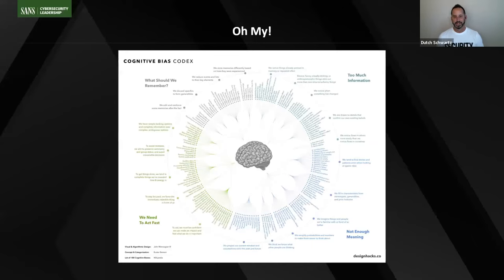Take a look at this slide — it is an eye chart, and I did that on purpose. The amount of cognitive biases that have been identified is overwhelming. Let's step back and talk about where this construct came from. It really came from Daniel Kahneman and his longtime collaborator Amos Tversky.